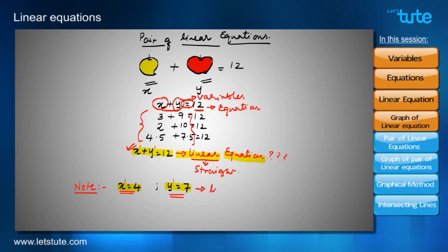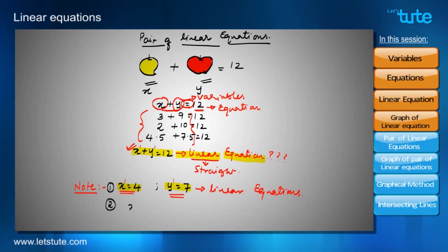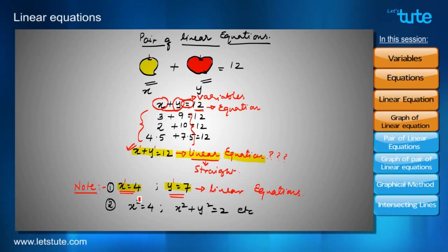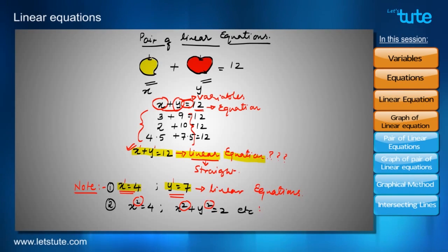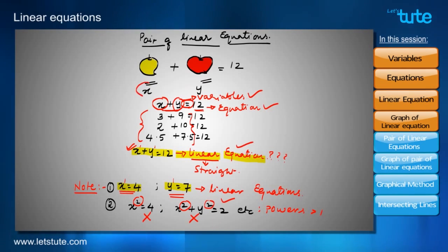Note number one: equations like X equals 4 and Y equals 7 are also called linear equations. Note number two: equations like X squared equals 4 or X squared plus Y squared equals 2, where powers of variables are greater than 1, are not called linear equations.